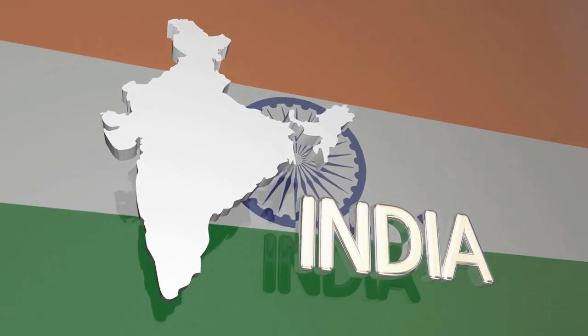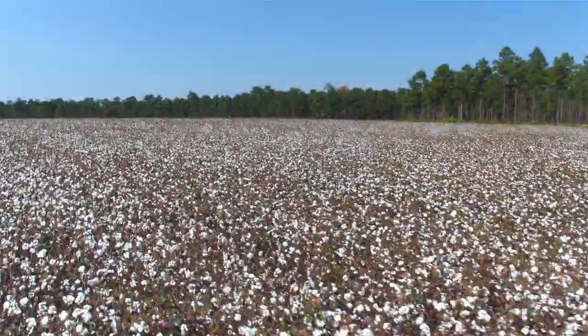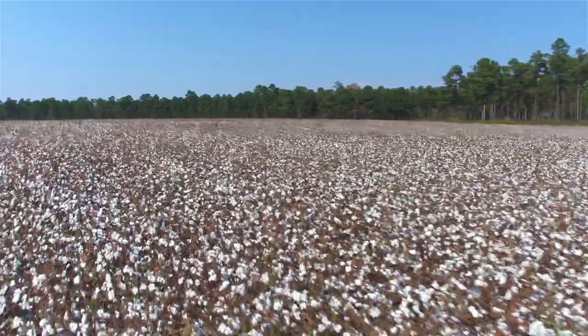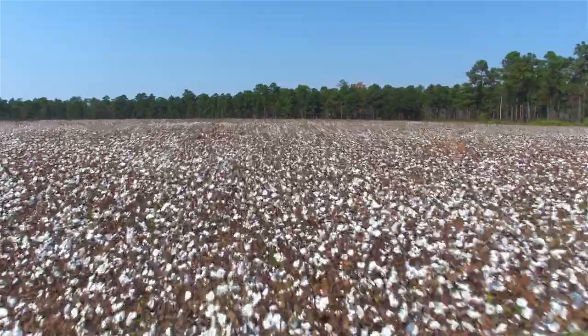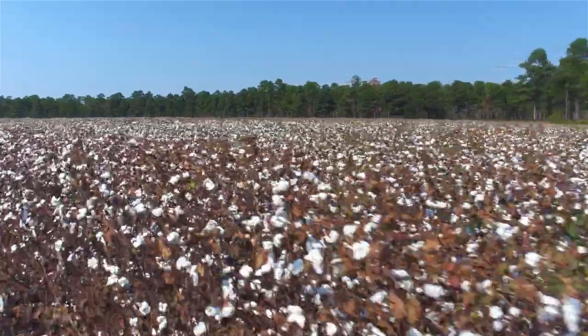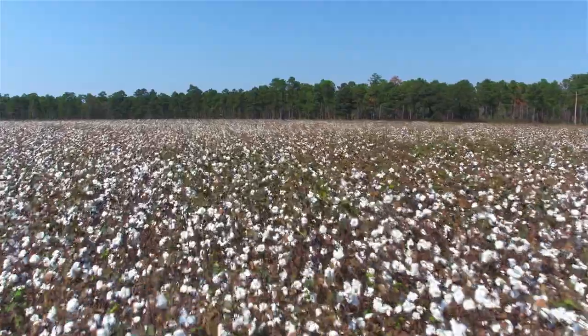Mahatma Gandhi started his push for India's independence when he went to a province and saw the suffering of the landless serfs and poor farmers. They were forced to grow crops like cotton and indigo; however, you can't eat cotton and you can't eat indigo. These people needed to grow food they could eat, and Gandhi fully supported them, saying this is where we can really start — people need to grow what they need to survive on. Gandhi was then arrested for causing unrest in the area and was forced to leave the province, as people were rallying outside the jail in support of him until the local authorities essentially asked him to leave.